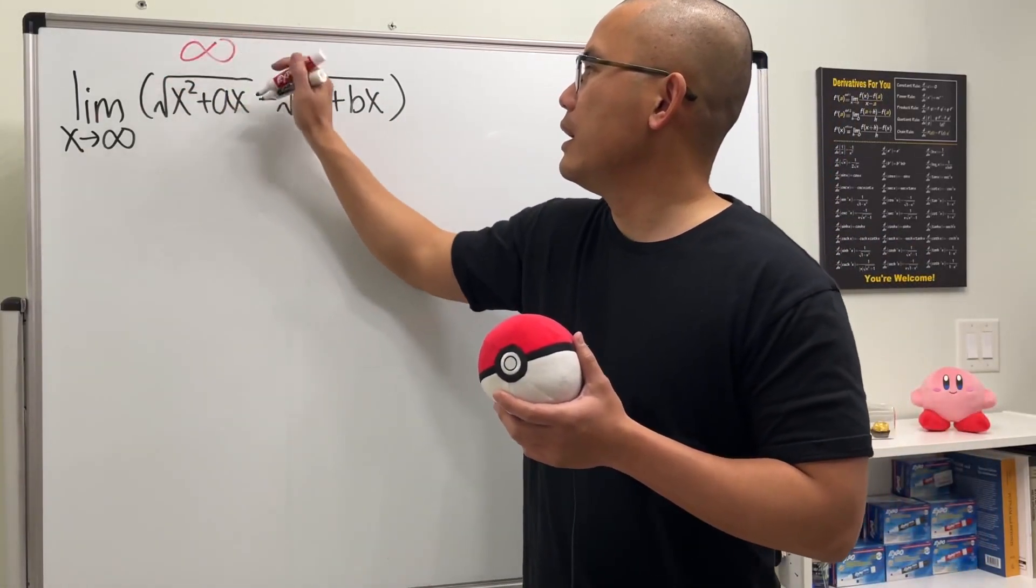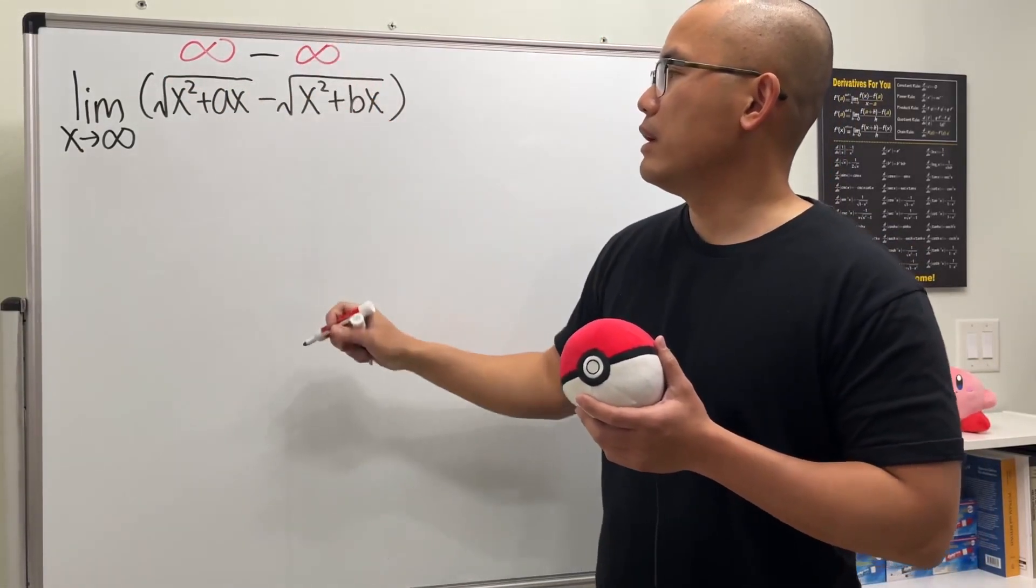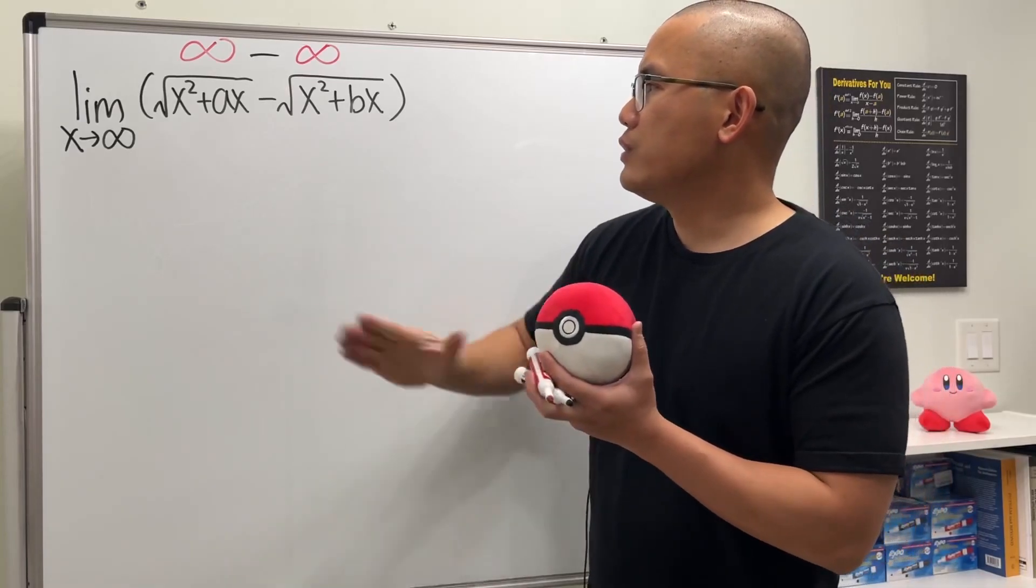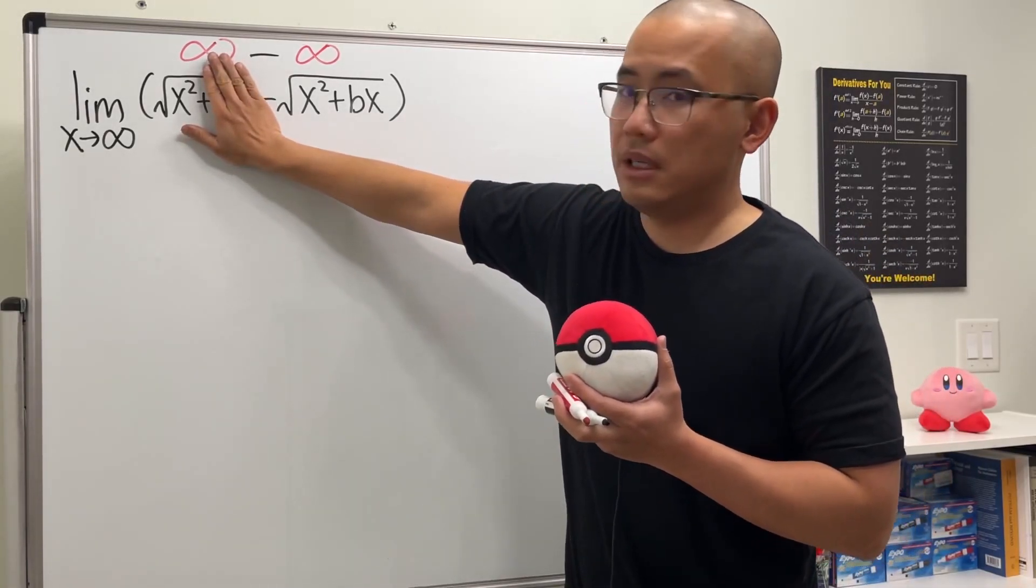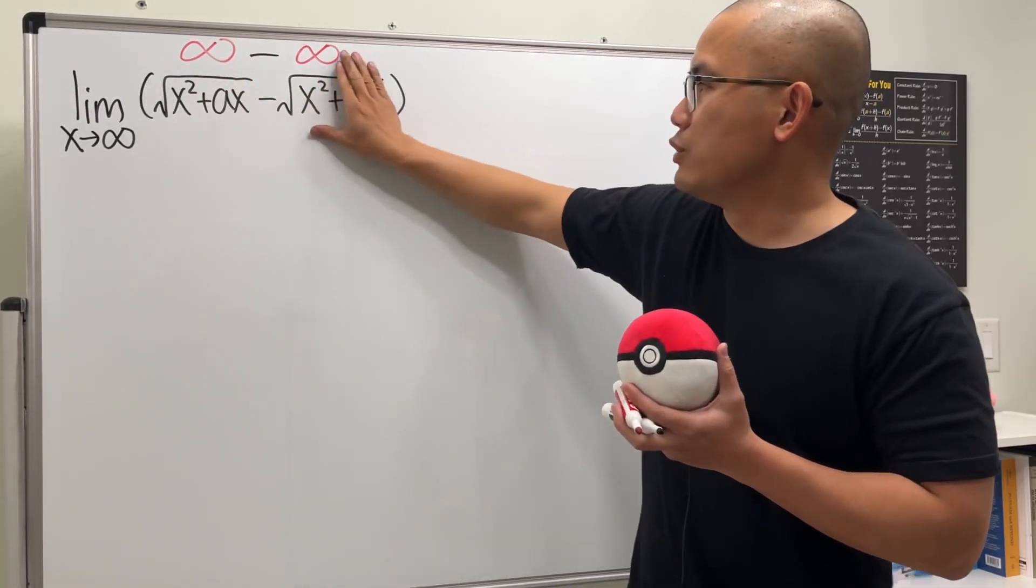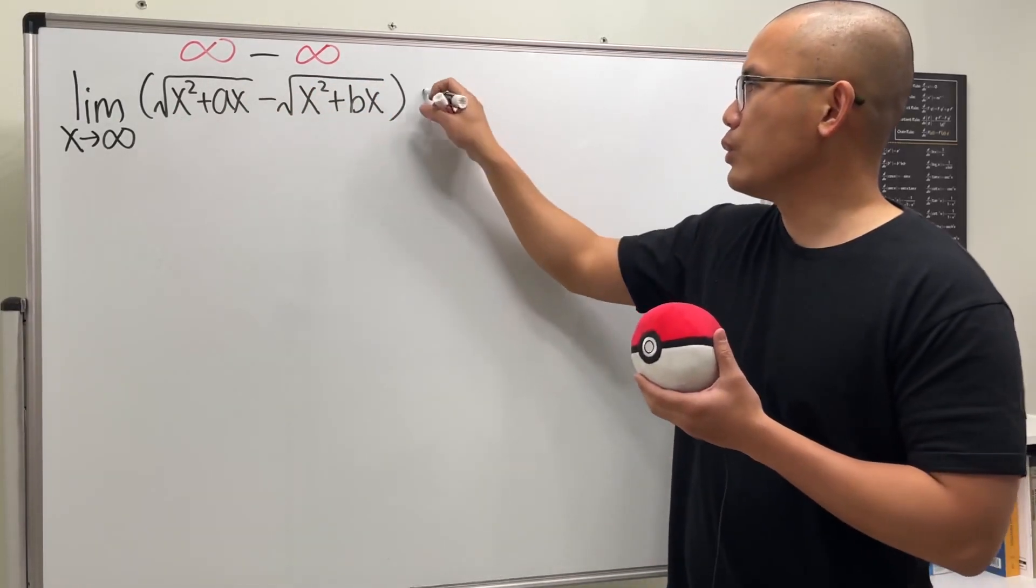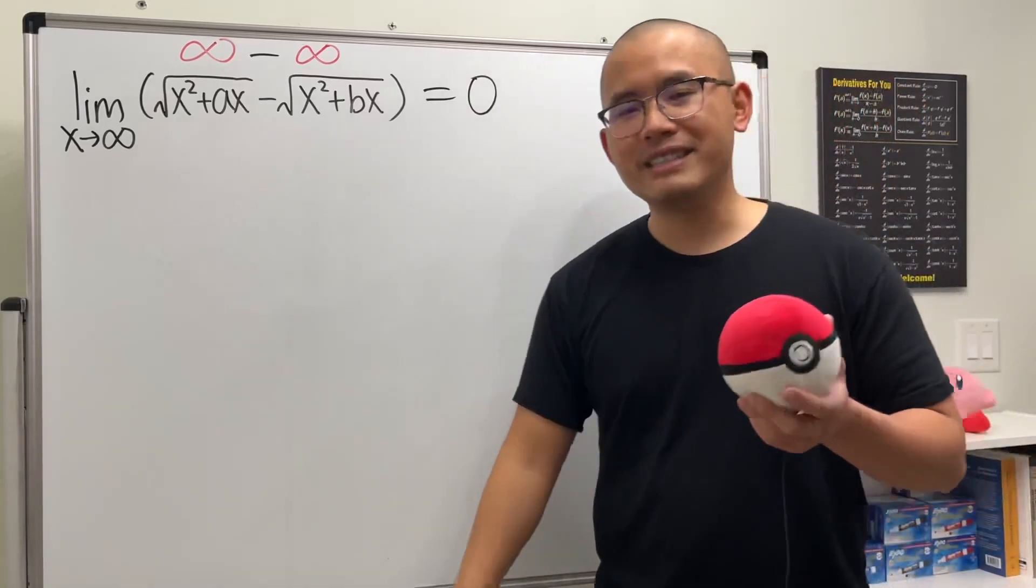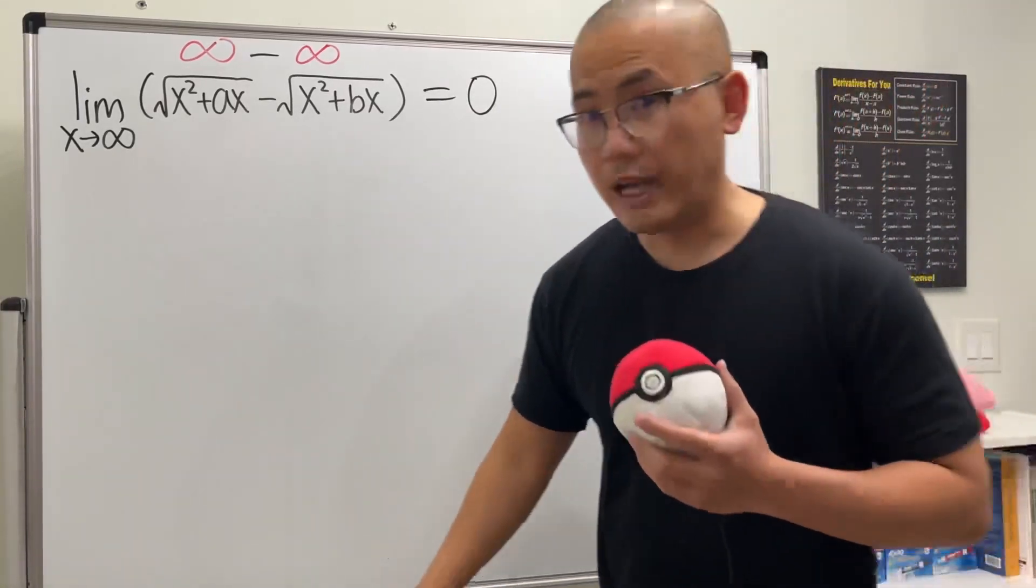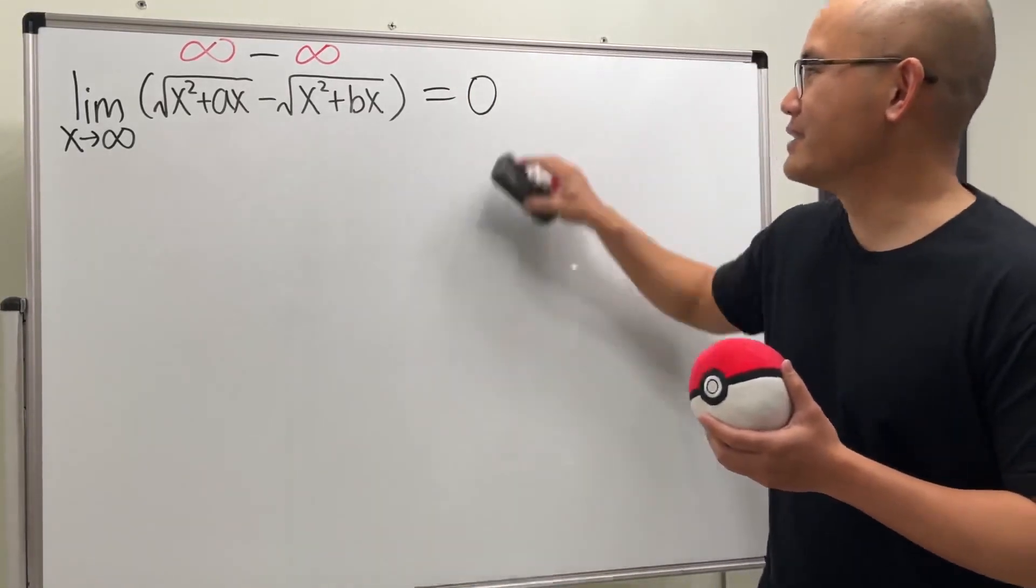It looks like we just have infinity minus infinity, and again if you just ignore that part because x is infinity, and likewise ignoring that part, they are exactly the same thing. So the answer is just equal to zero. That's it, end of the video. Of course not, I told you it's tricky already because the answer is not equal to zero.